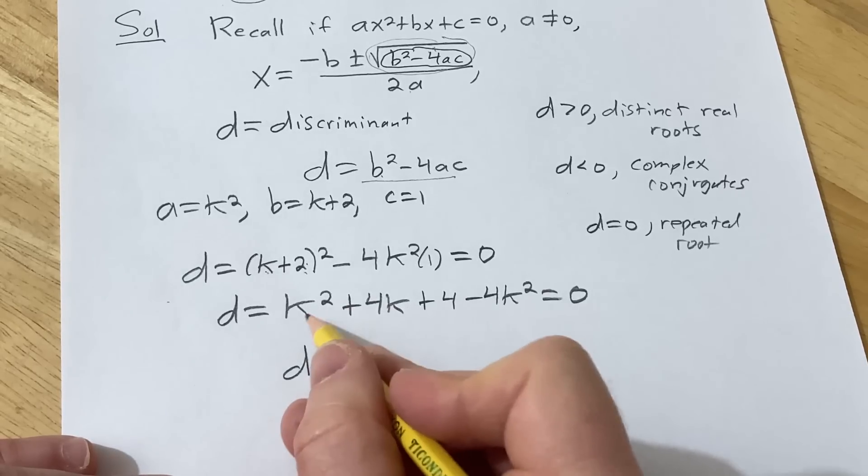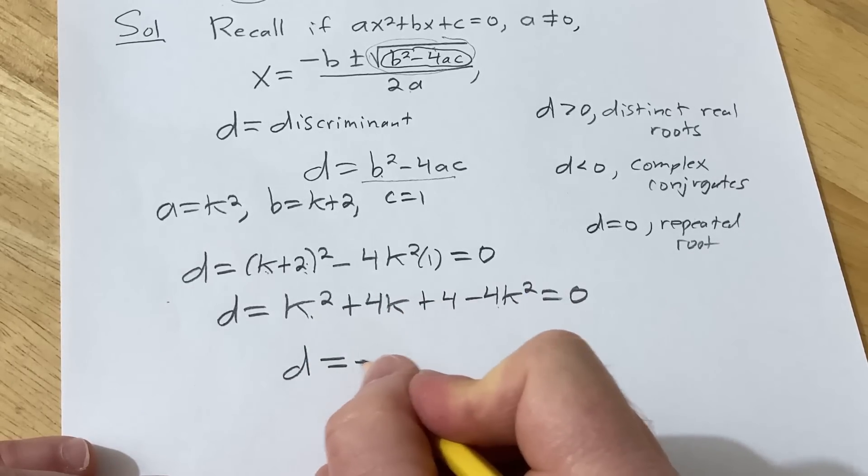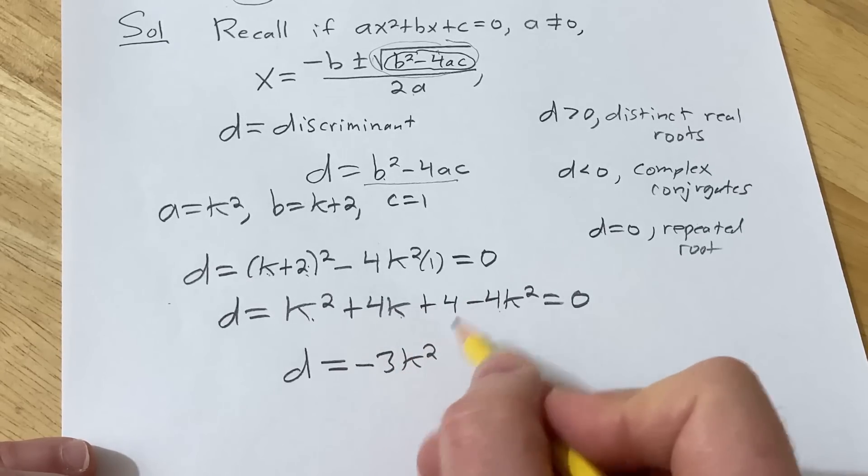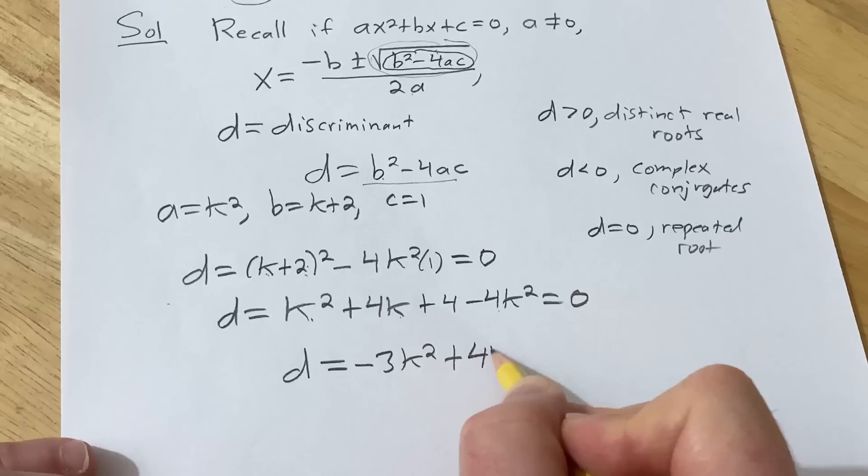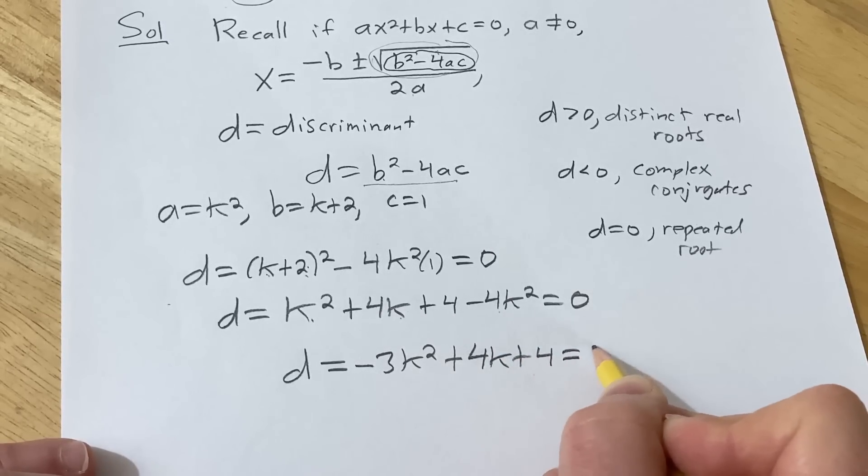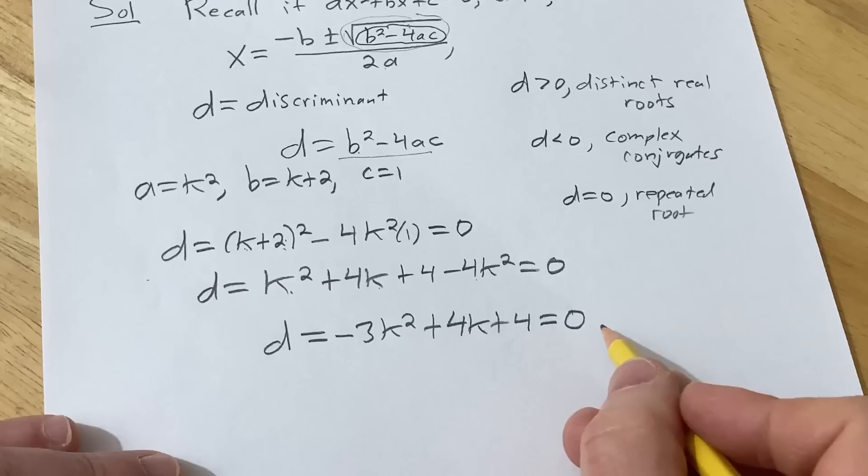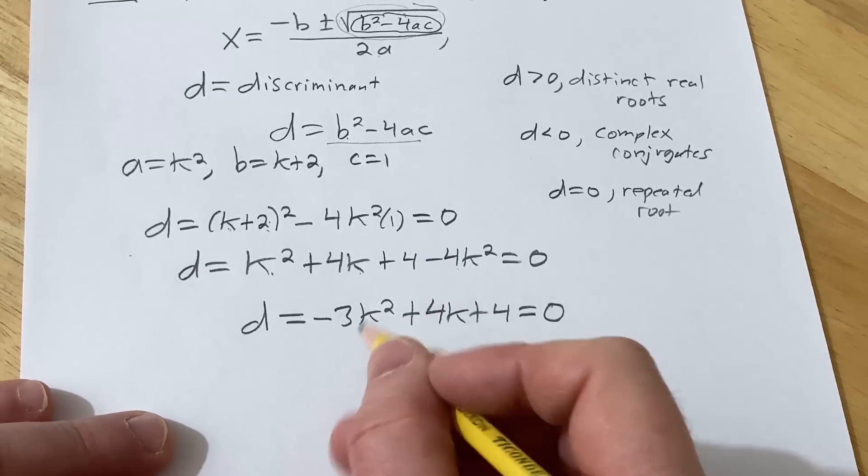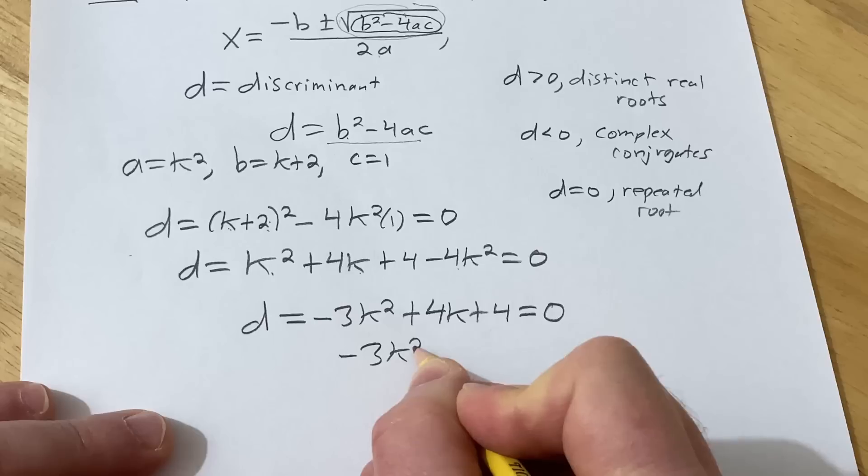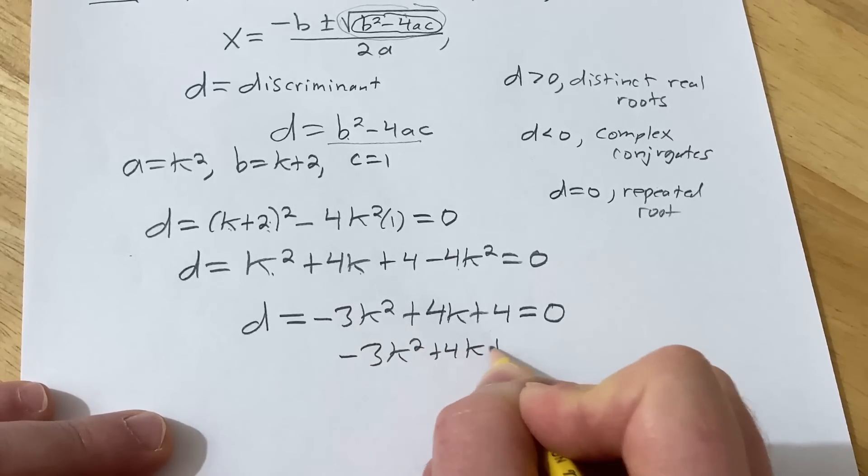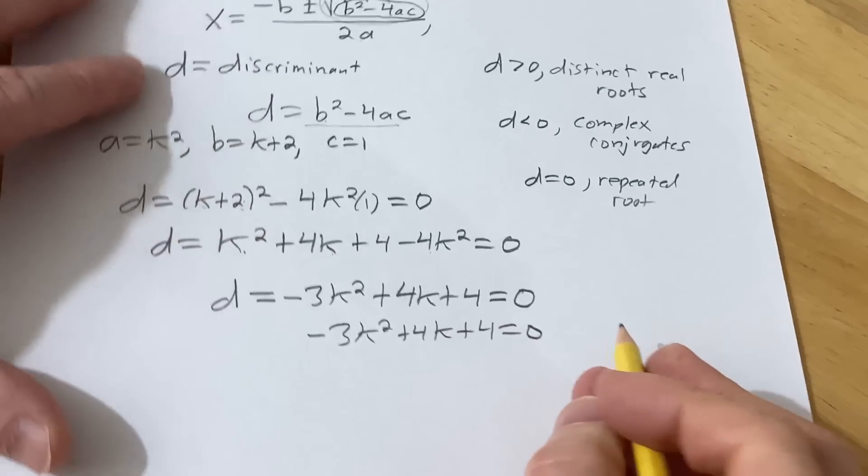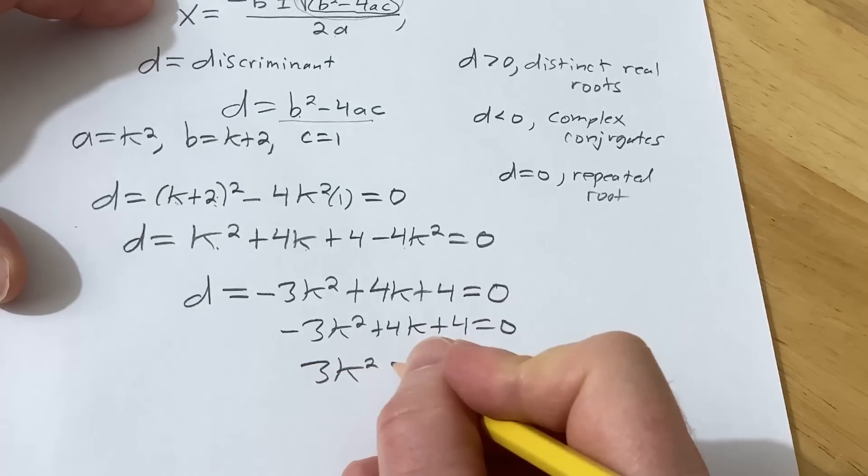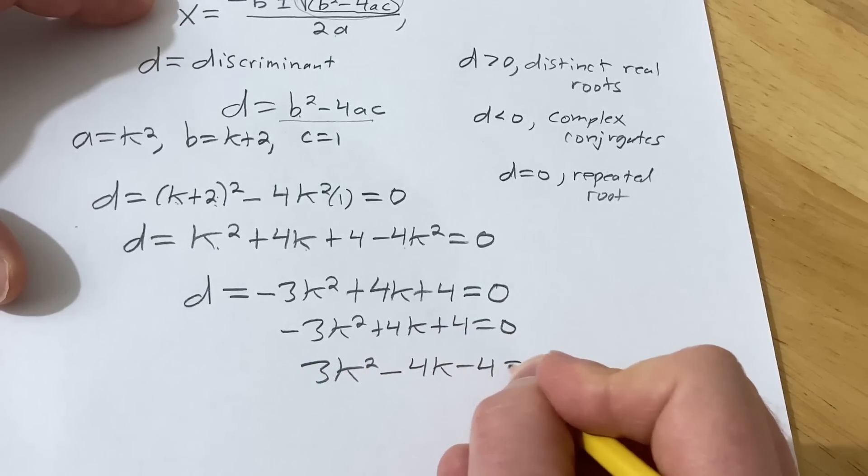So d is equal to, let's see, k squared minus 4k squared is minus 3k squared. And looks like we have a 4k and a 4. So plus 4k plus 4. We want that to be equal to 0. So we have this equal to 0. I don't like the negative there because it's going to make it harder for me to think about factoring. So what you can do is just multiply by negative 1 and then just change the sign on all of these. So 3k squared minus 4k minus 4 equals 0.